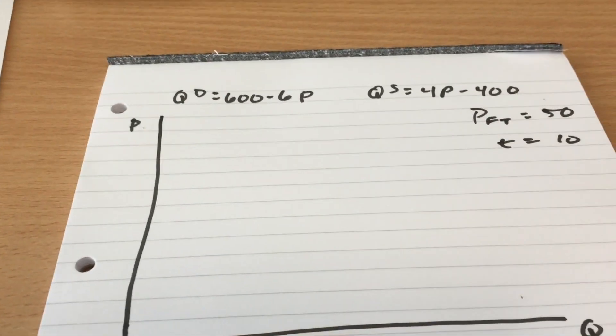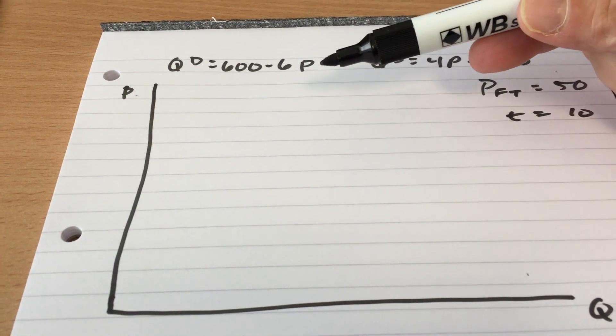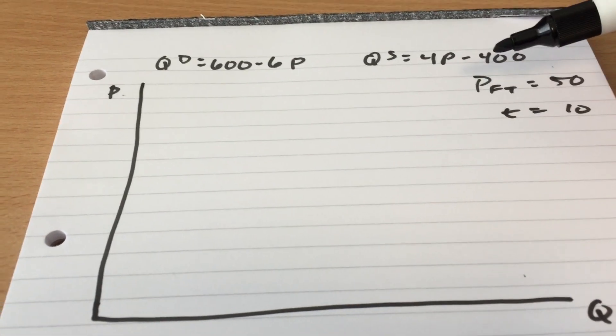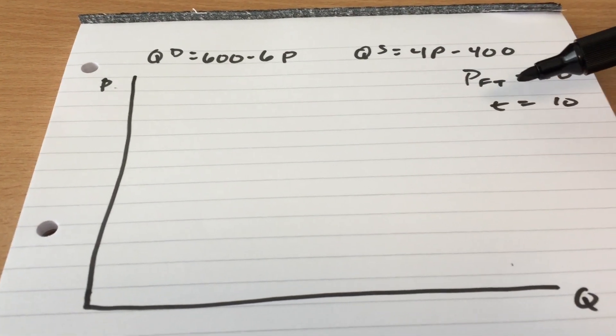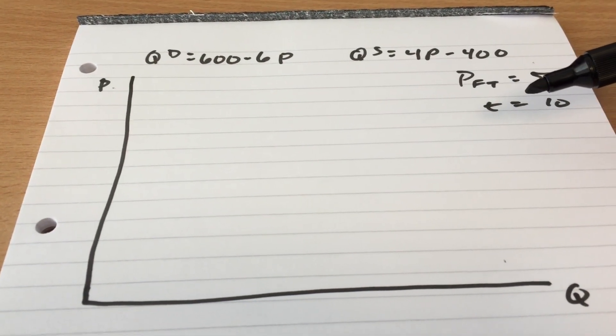Okay, so now we've got a small country. A small country has a demand curve of 600 minus 6P, a quantity supply of 4P minus 400, they have a free trade price of 50 and they add on a tariff of 10.